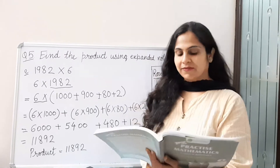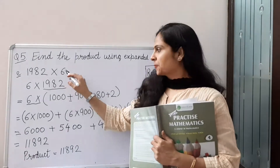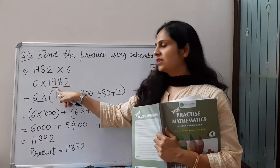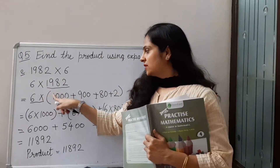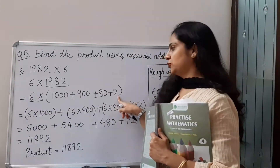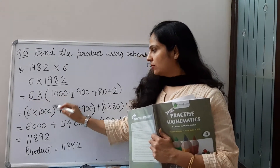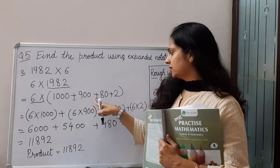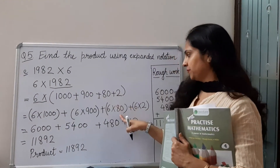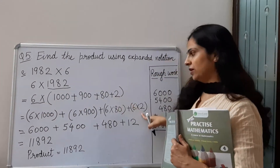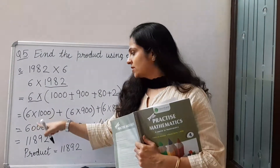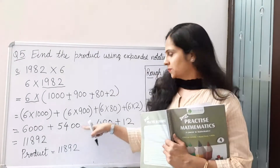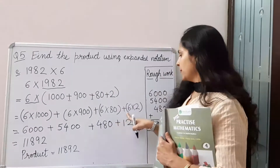Now let's do Part E: 1982 multiplied by 6. We write 6 here and 1982 in expanded form: 1000 plus 900 plus 80 plus 2. Now we multiply: 6 multiplied by 1000, plus 6 multiplied by 900, plus 6 multiplied by 80, plus 6 multiplied by 2. That gives us: 6 ones are 6 with three zeros = 6000; 6 nines are 54 with two zeros = 5400; 6 eights are 48 with one zero = 480; plus 6 twos are 12.